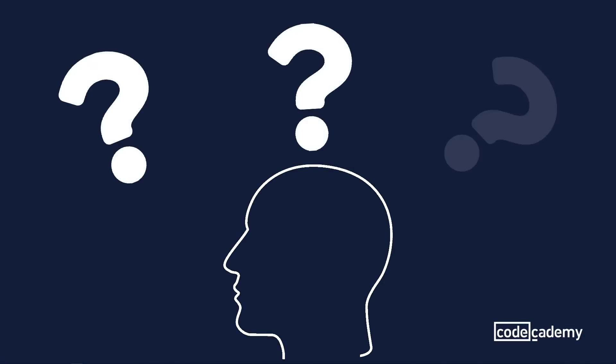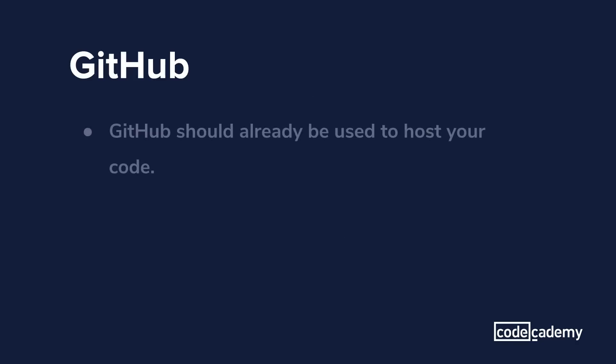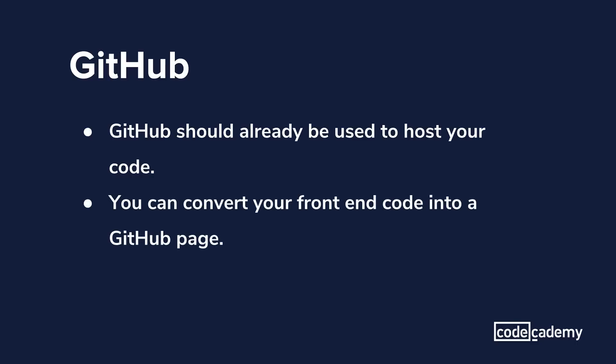Now, we've just gone over a lot of hosting information, and I'm not going to recommend any of it to start out with. We're going to take a different direction, but I wanted you to have the knowledge of what your options are. What I'm actually going to recommend is GitHub, and GitHub should already be used to host your code. This is depending on where you are in your development path — if you haven't gotten to that part yet, just be aware it is part of CodeAcademy's curriculum. The great thing about already having your code on GitHub is you can convert your front-end code into a GitHub page, and this is an additional free service — so you don't have to worry about any out-of-pocket costs.